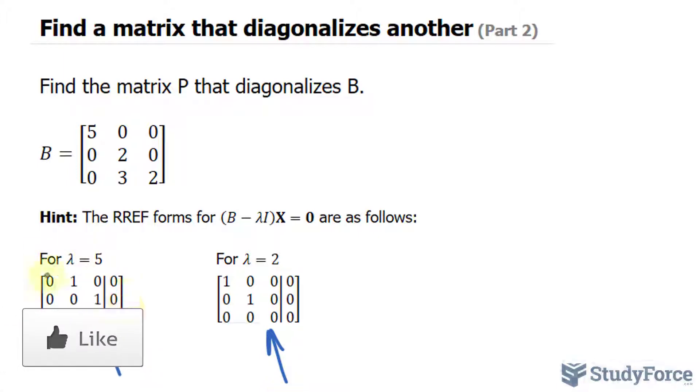So once you get to this stage in solving these types of problems, you want to look for columns. Let's take this one for instance. We want to look for columns that don't have a leading 1, and that will be our parameter. So this column does not have a leading 1, and if I call this x sub 1, I can say x sub 1 is equal to a parameter t.